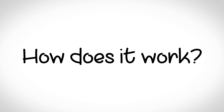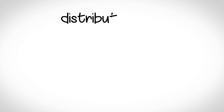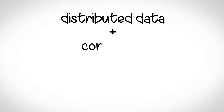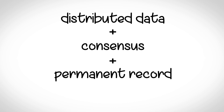So, how does it work? In the simplest terms, we can understand blockchains by looking at four elements: distributed data, consensus, permanent record, and trust.